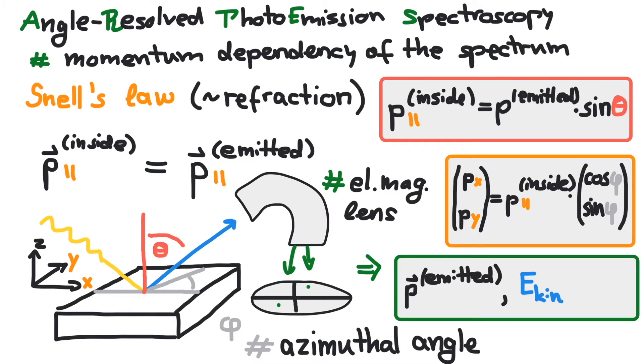In recap, with the simple combination of photoemission and refraction, we obtained the following information: the kinetic energy and the vectorial momentum of the electron inside the material.